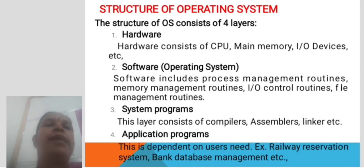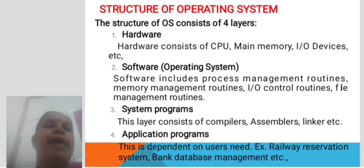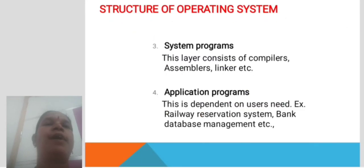The third layer is System Programs. This layer consists of compiler, assembler, linker, etc. The fourth layer is Application Programs, which are independent and user-specific. Examples include railway reservation systems, bank systems, and database management systems.